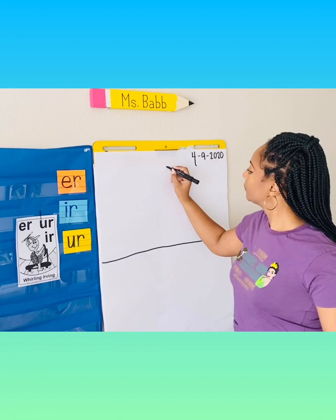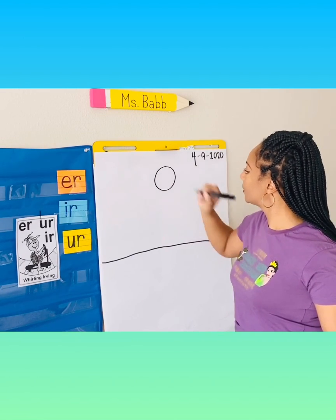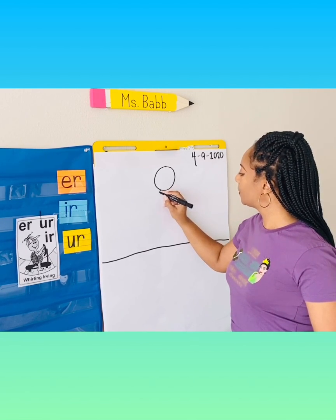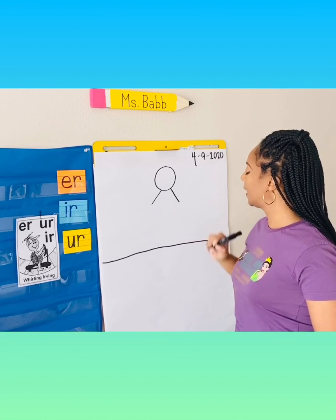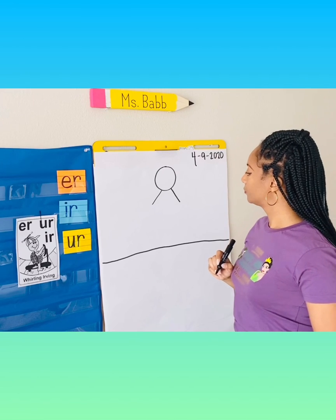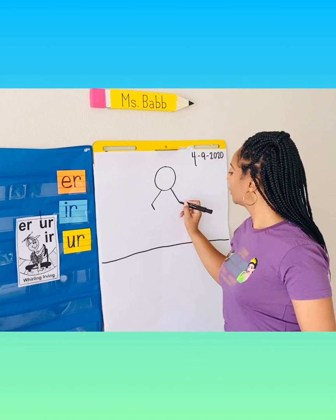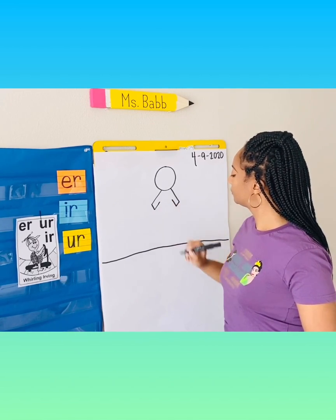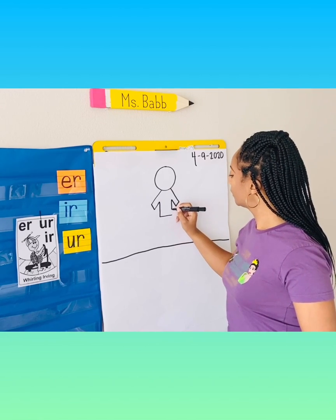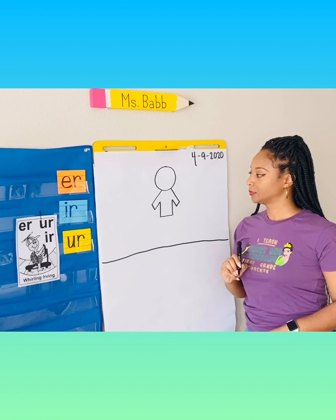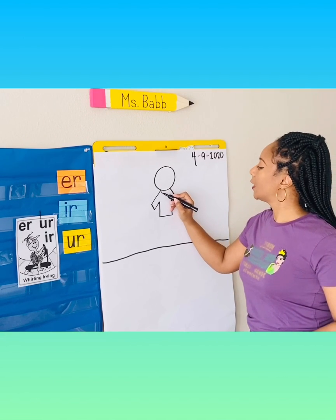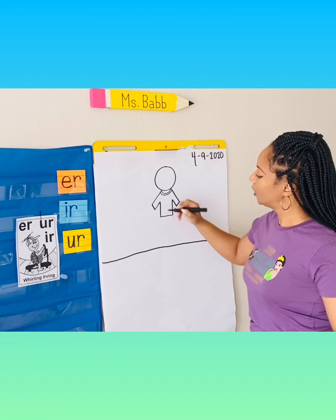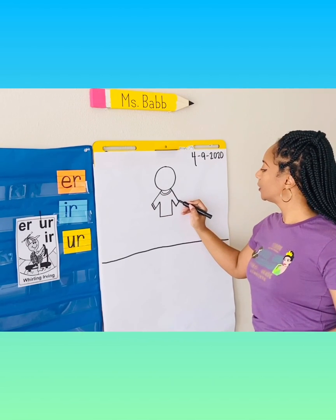Okay, so first step is a circle. Next step: line here, line here. Come down, up. Down and connect. We're going to draw a rounded line like this, and another rounded line. We'll draw a line here on this side and a line on this side.